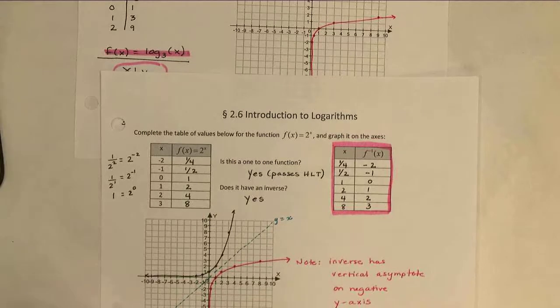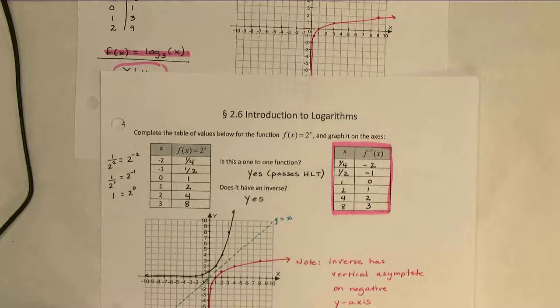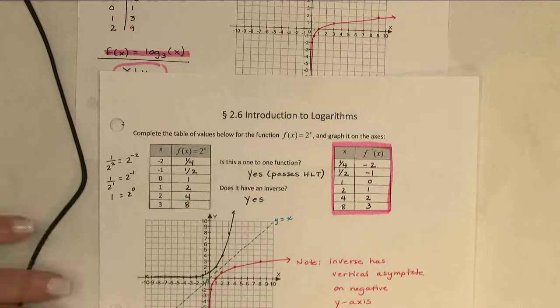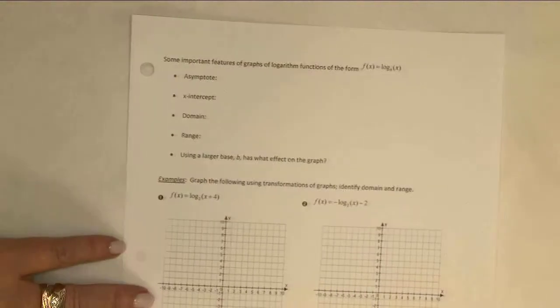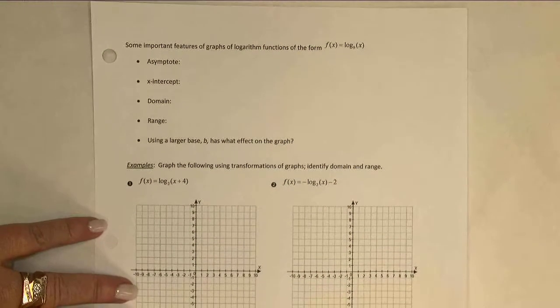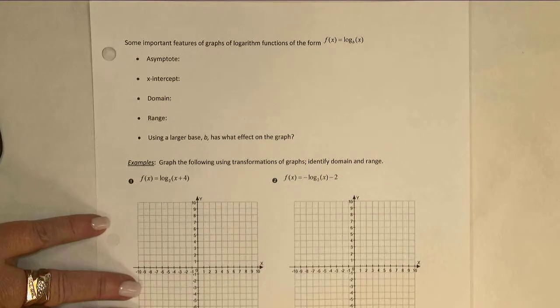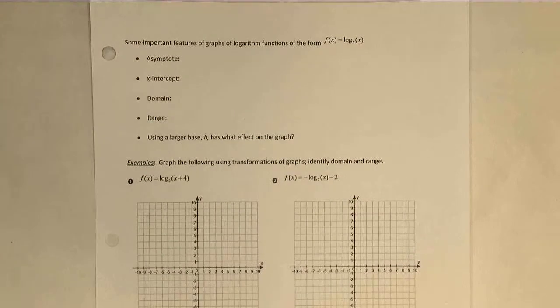In fact, all logarithms with bases larger than 1, which is actually the only ones that I'm going to ask you to consider, are going to have graphs of this shape. Once we know the basic shape of a graph, we know that we can graph variations just by shifting left, right, up, down, upside down, right? So let's list the basic features of a logarithm graph.